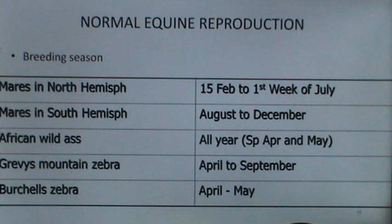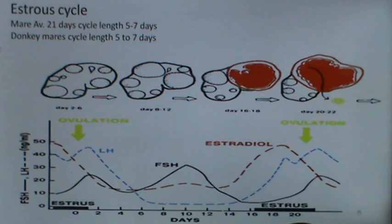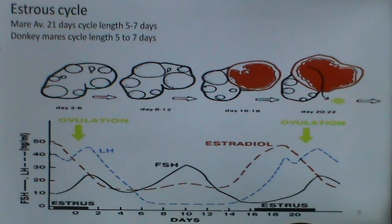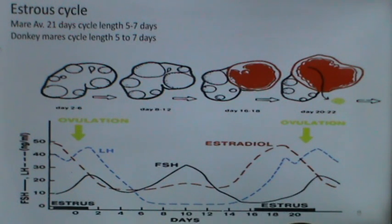Mares are long day breeders — they generally breed during a time of the year when days are long. The mare has an estrous cycle of 21 days and the estrous period length varies from 5 to 7 days. For donkey mares, the cycle length is also from 5 to 7 days. This graphical representation shows what happens during the estrous cycle in the mare — the changes that occur during estrus and during the cycle. The estrous cycle length is 21 days and the estrous period ranges from 5 to 7 days.